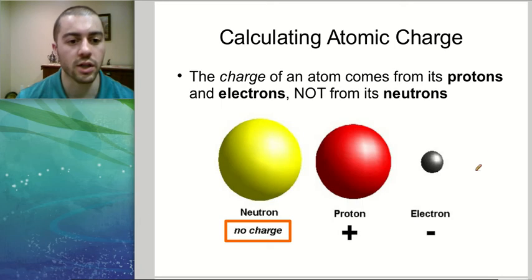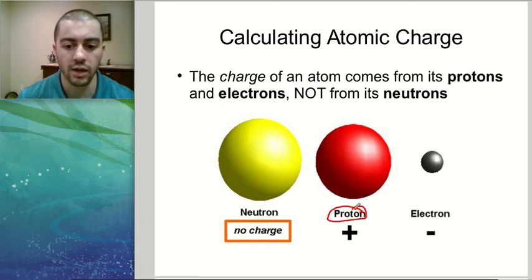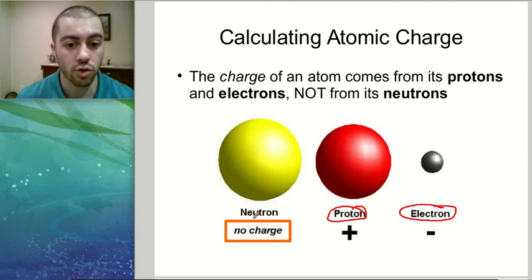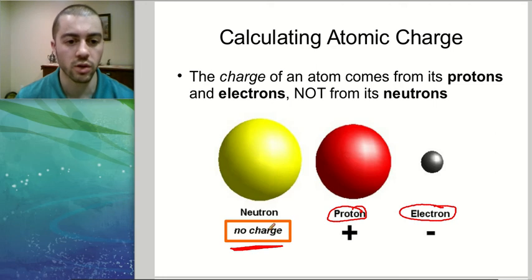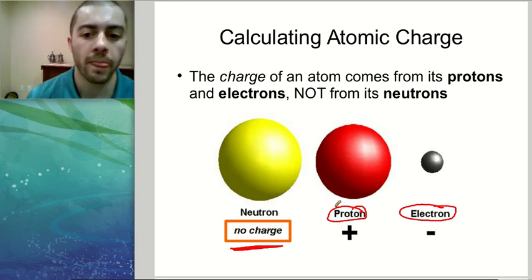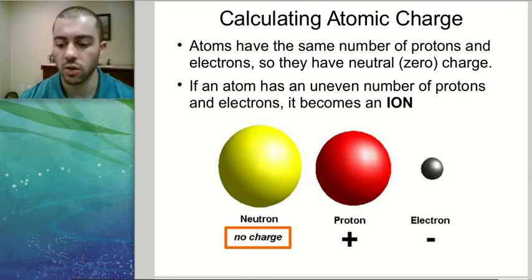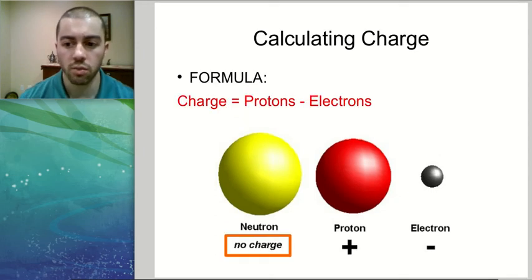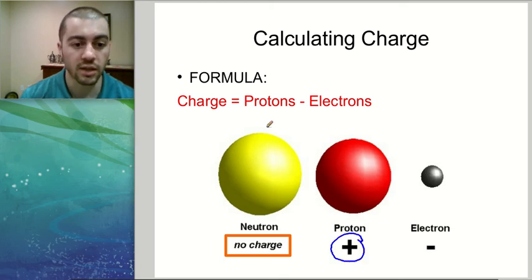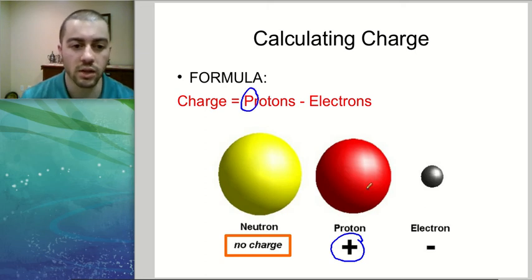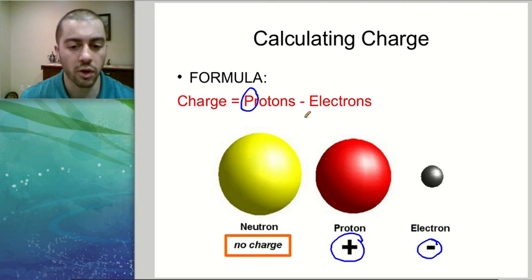When calculating atomic charge, it's a little different. This time we count the protons and the electrons, but not the neutrons, because neutrons have no charge. The formula is: charge equals protons minus electrons. Protons are positive — remember, P for proton, P for positive. Electrons are negative, so we subtract them when calculating charge.